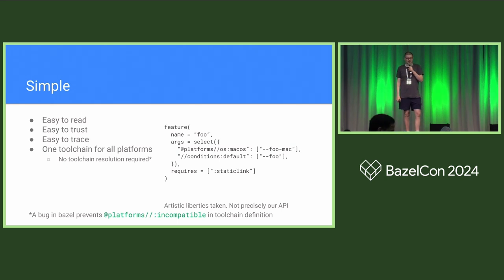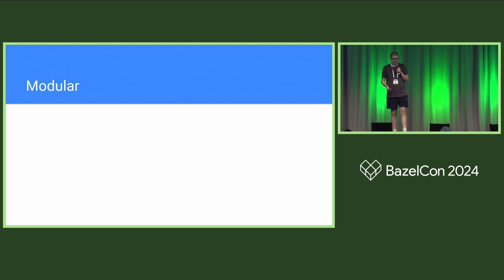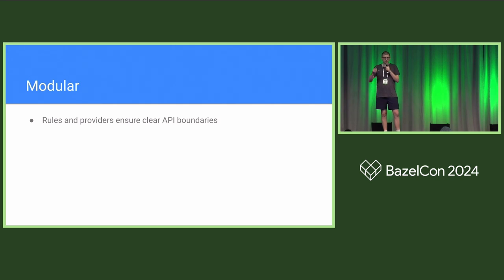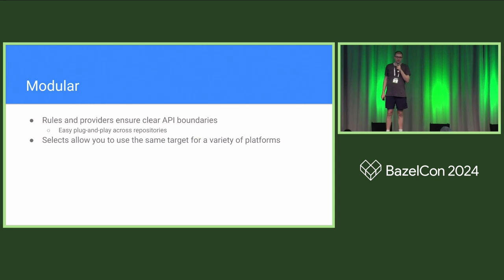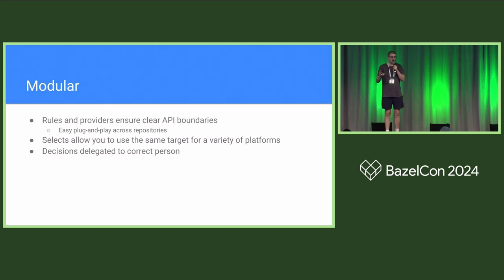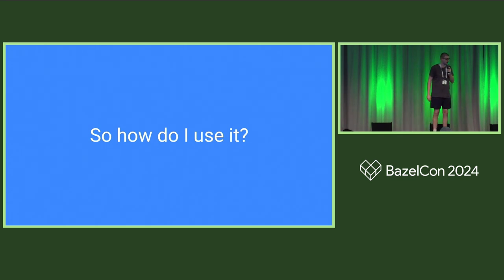There is one little bug in Bazel: if you try to use platforms_incompatible to prevent your toolchain working on platforms you haven't got it working for, it will throw some errors at you. But other than that, yeah. So modular — this is modular because we have rules and providers that ensure clear API boundaries. Anyone can write a thing that provides that provider and know it's going to be compatible with somebody else's. You can write args, and anyone else can import your repository and write a features that wraps it. The decisions in our toolchain have been delegated to the correct person — the toolchain should be deciding whether or not a feature is enabled. Now I'm going to hand it off to Armando to talk about how to use the toolchain.